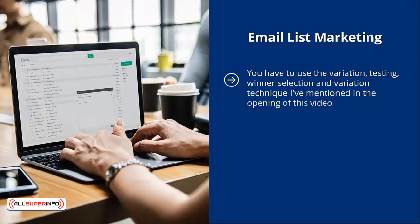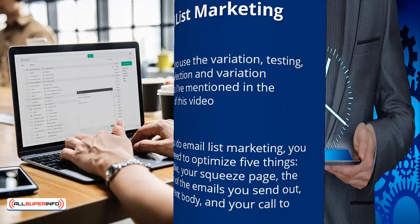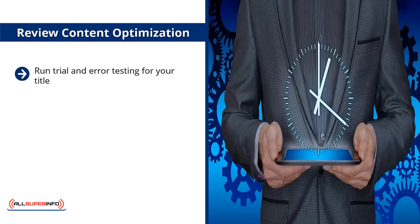Email list marketing: you have to use the variation testing, winner selection, and iteration technique mentioned at the opening of this video — across the board. When you do email list marketing, you actually need to optimize five things: your freebie, your squeeze page, the headlines of the emails you send out, their content body, and your call to action. You might also want to optimize the offers you promote in your emails. Review content optimization: run trial-and-error testing for your title — come up with many different variations, pick the winner, and come up with more variations until you get a lot of people reading or dwelling on your content. Your metric for success involves click-throughs as well as dwell time.